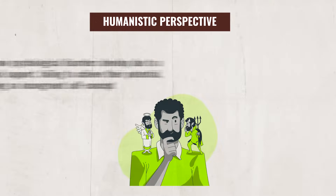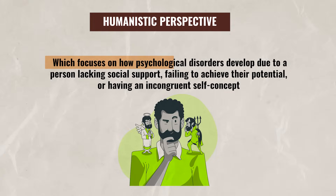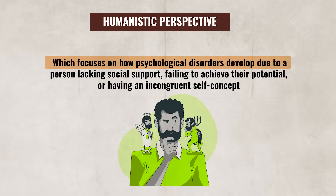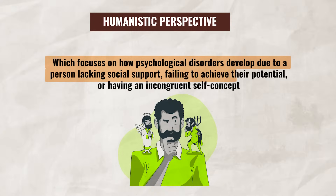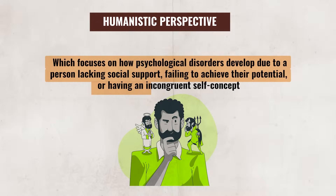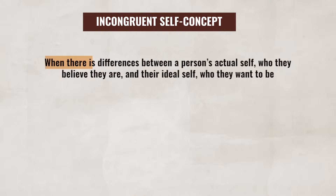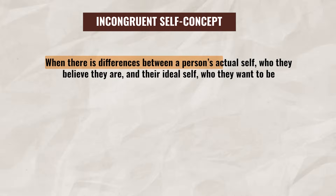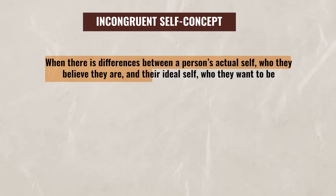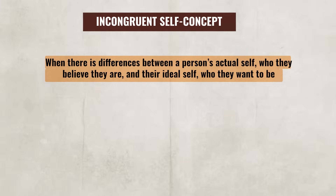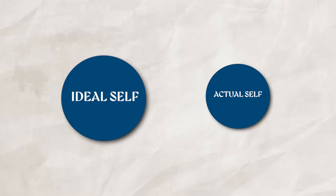Up next, we have the humanistic perspective, which focuses on how psychological disorders develop due to a person lacking social support, failing to achieve their potential, or having an incongruent self-concept. An incongruent self-concept occurs when there are differences between a person's actual self — who they believe they are — and their ideal self — who they want to be. If the discrepancy between these two concepts is too large, it can lead the individual to become more anxious, have lower self-esteem, and make it more difficult to reach their full potential.